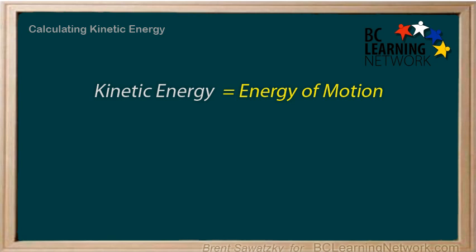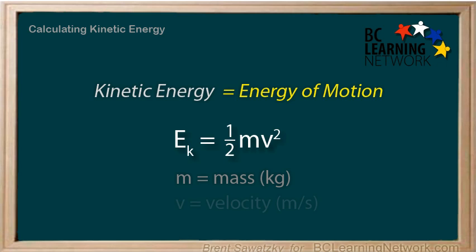The equation we're going to use is kinetic energy, or EK, equals one-half mv squared, where m is the mass of the object, and that's in kilograms, and v is the velocity, or speed, of the object, and that's in meters per second. The resulting calculated kinetic energy will be in joules.